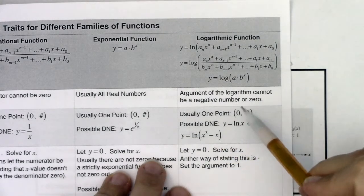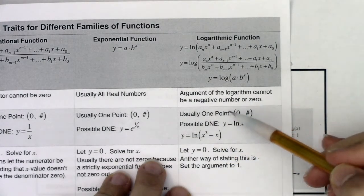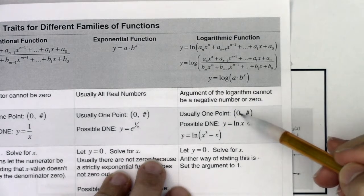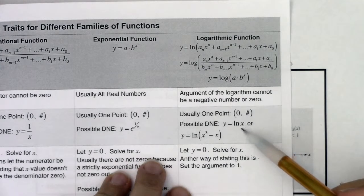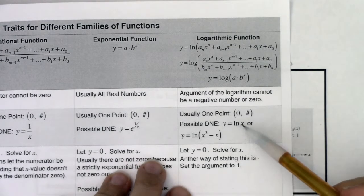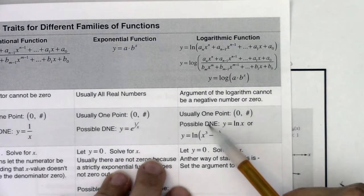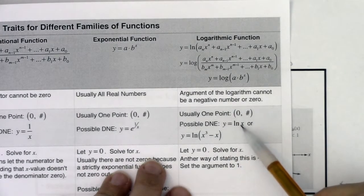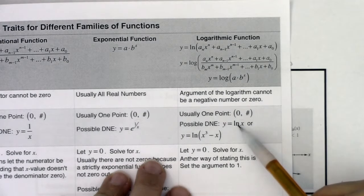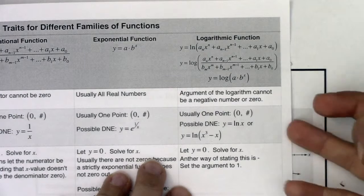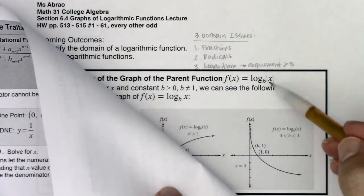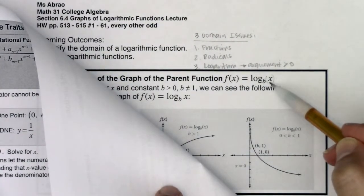For the y-intercept, we get it the way we always do — you let x equal zero. But it's possible you won't have a y-intercept for these logarithms. If it zeroes out your argument, you're not going to have a y-intercept, and so we would say does not exist. You don't have a y-intercept on ln(x), and as we just saw on our parent function, we didn't have a y-intercept there.